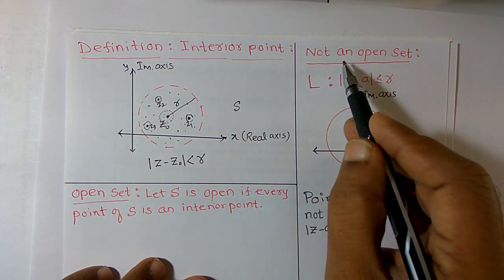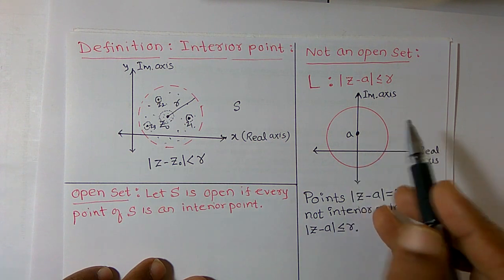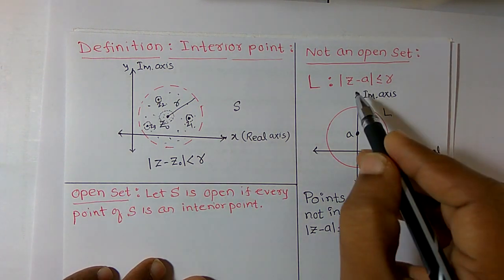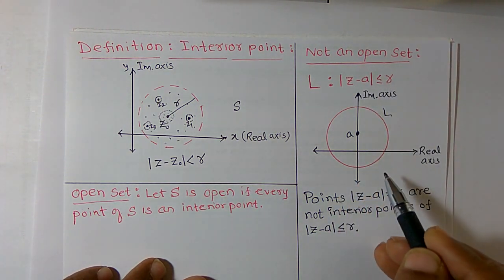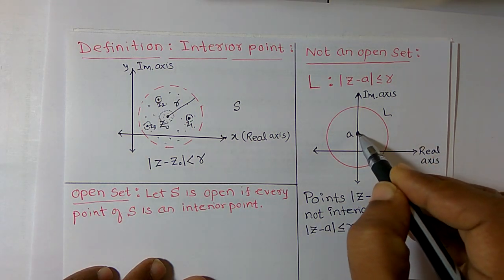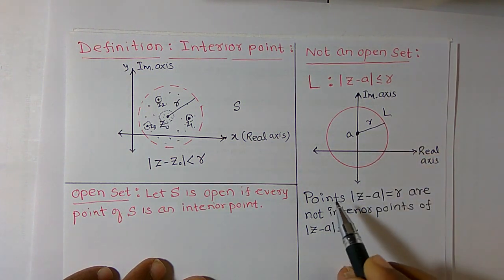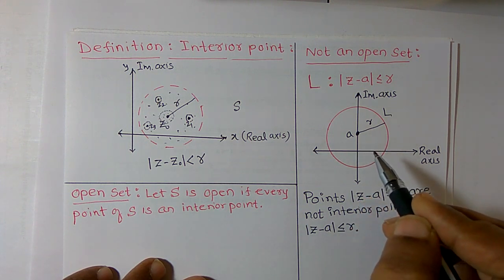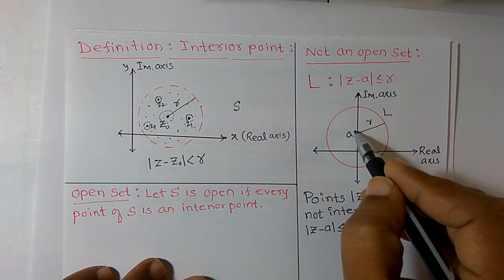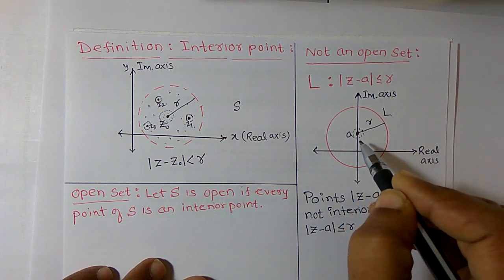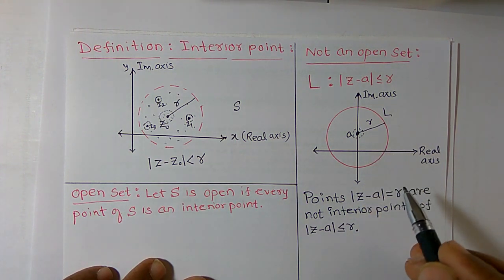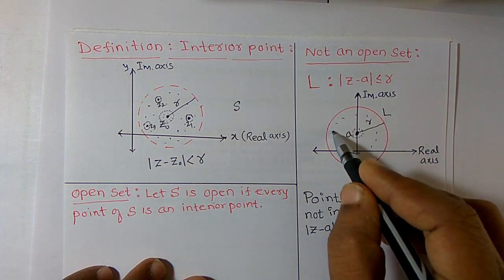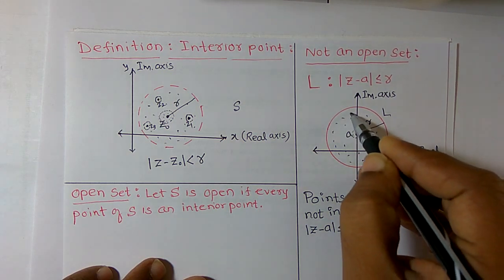In a similar way we can define a set that is not open. I want to call this disk l, which is mathematically denoted by the modulus of z minus a is less than or equal to r, with radius r and center a. Now I want to verify whether a is an interior point. Clearly a is an interior point because I can construct an open disk around a and all those points belong to l.